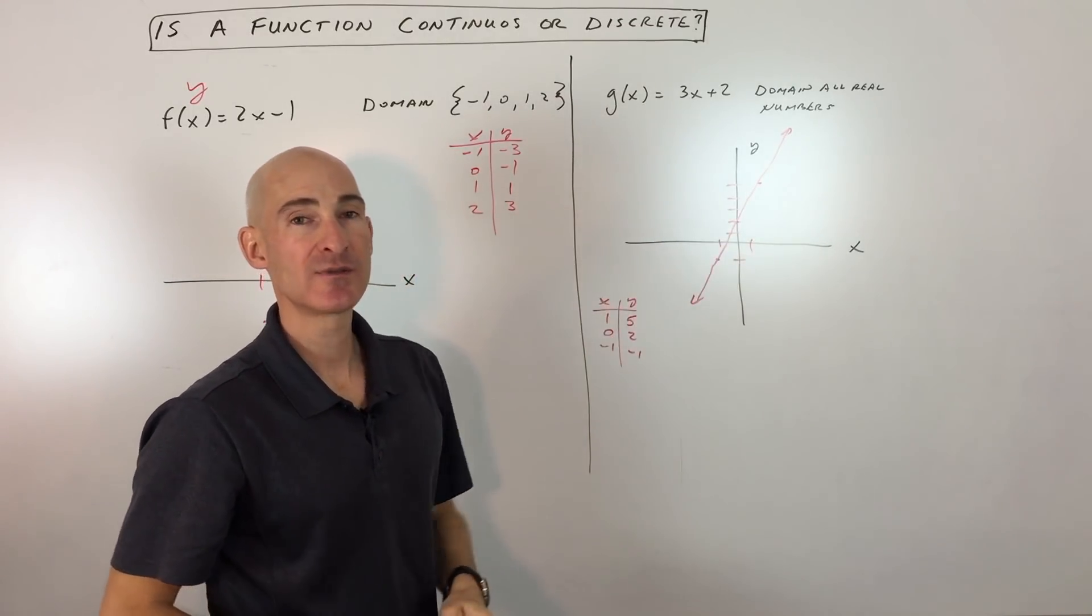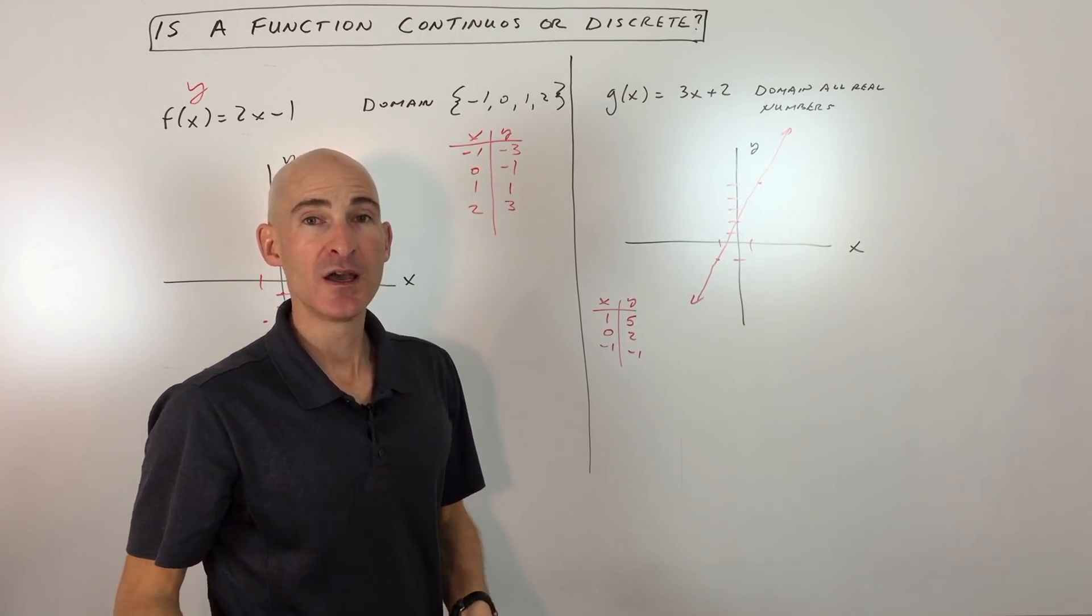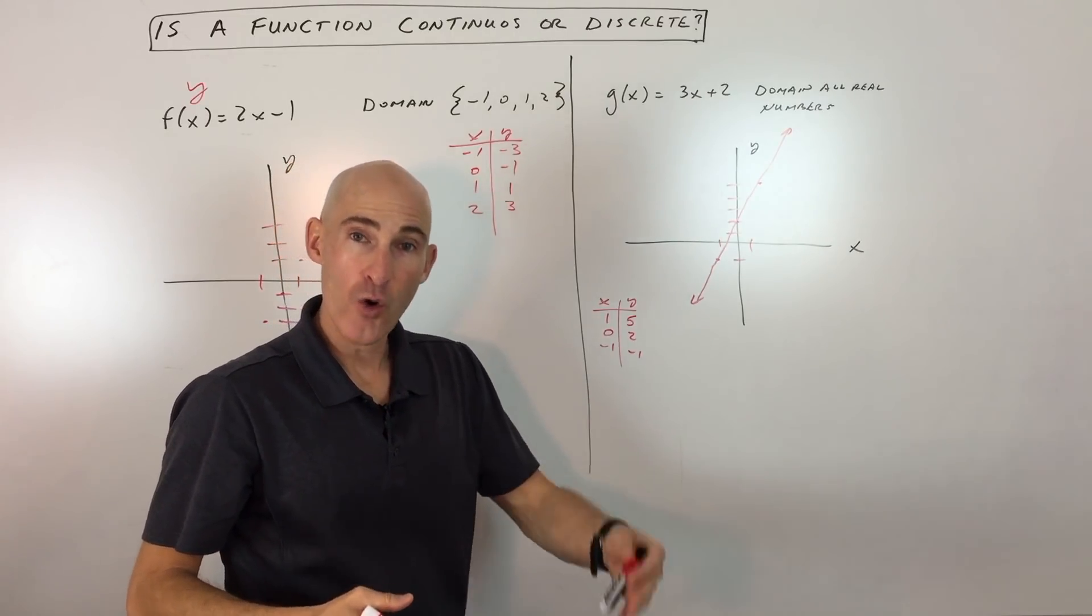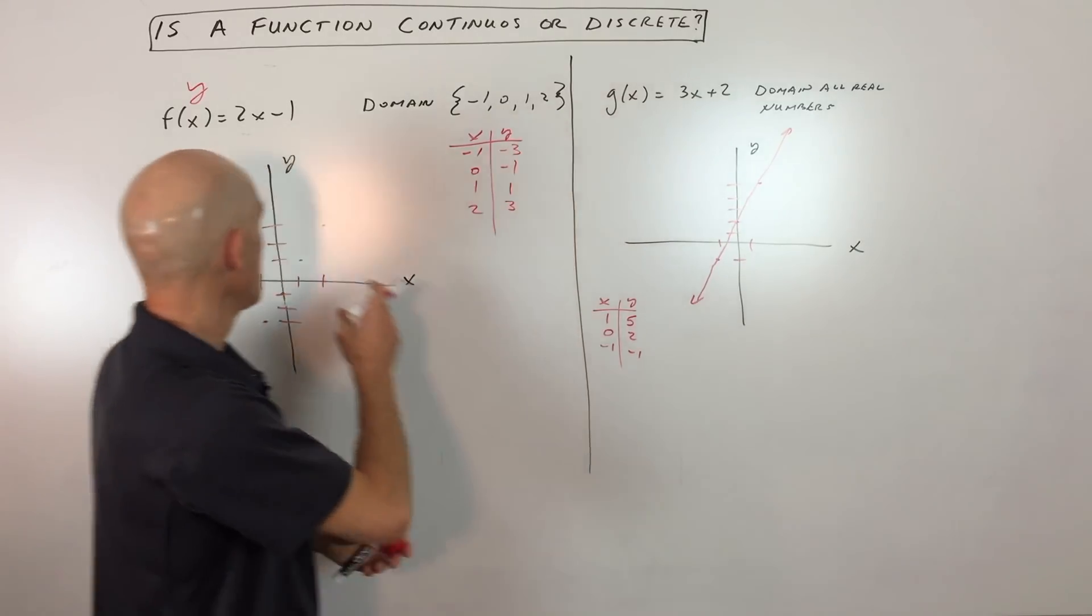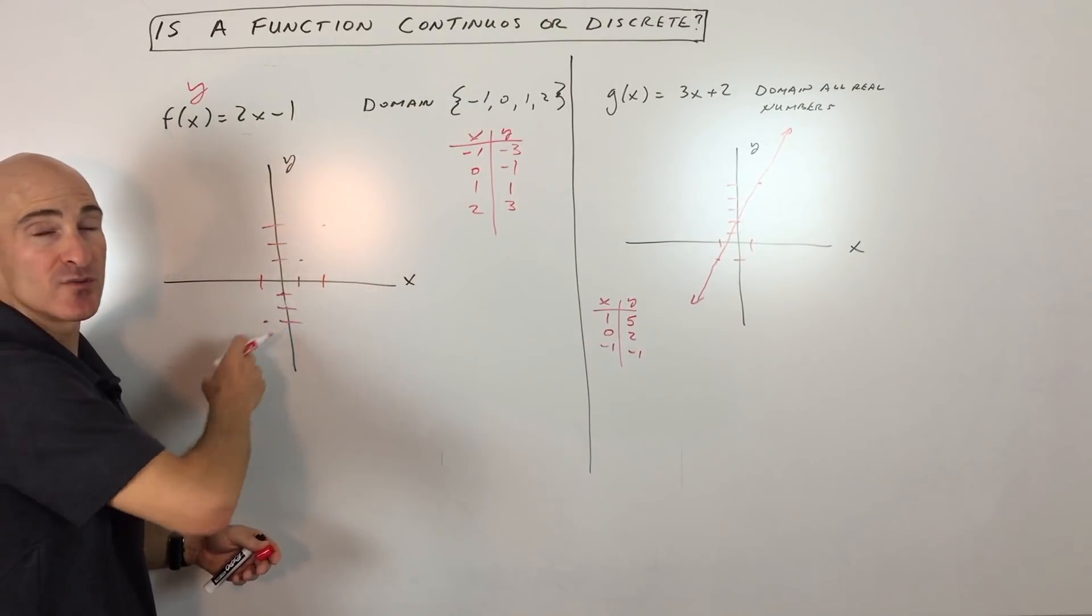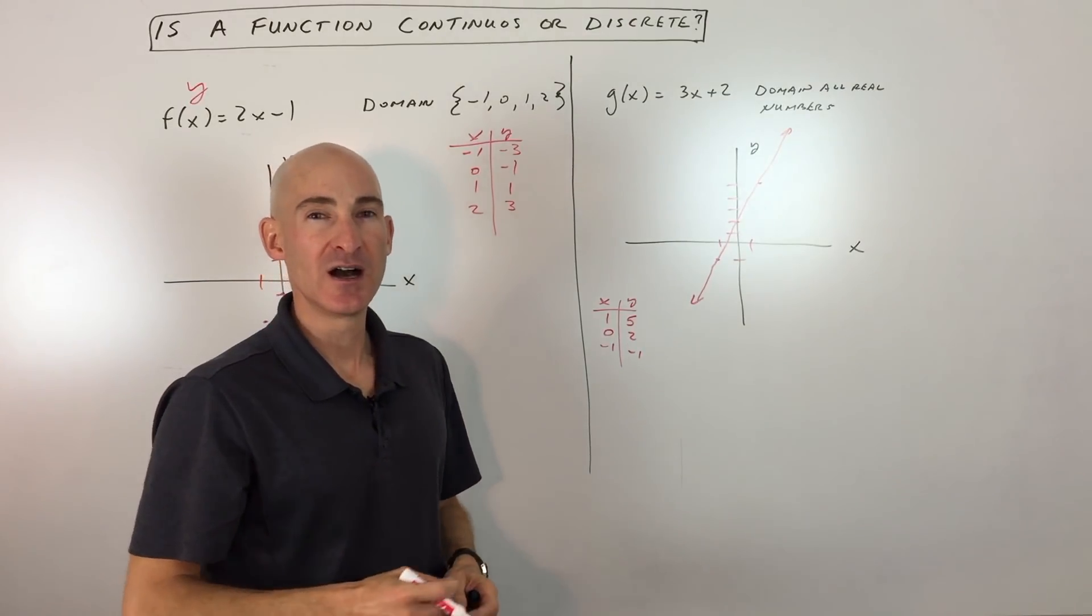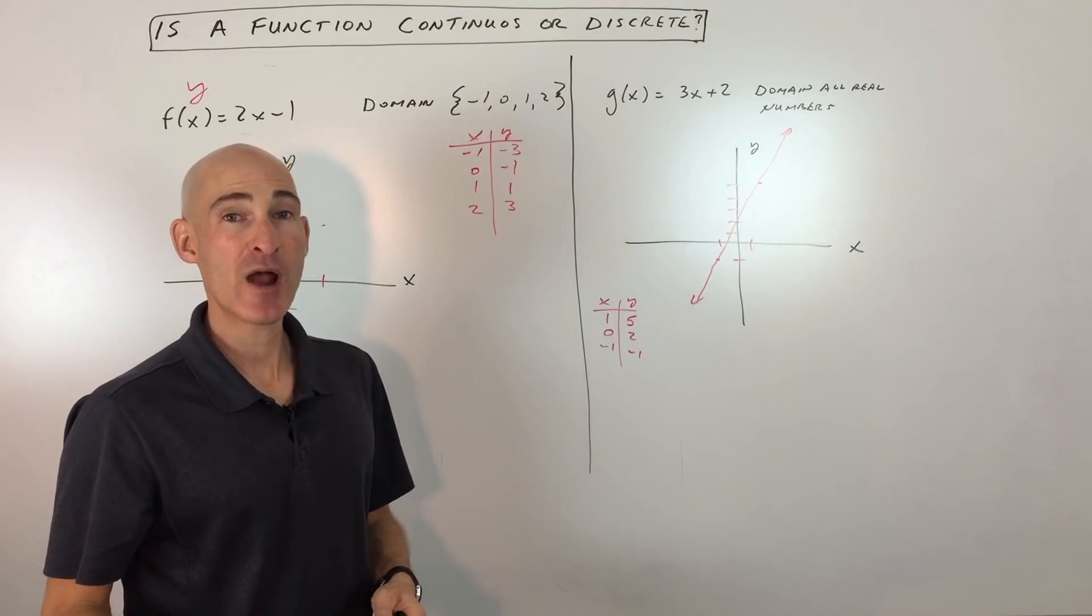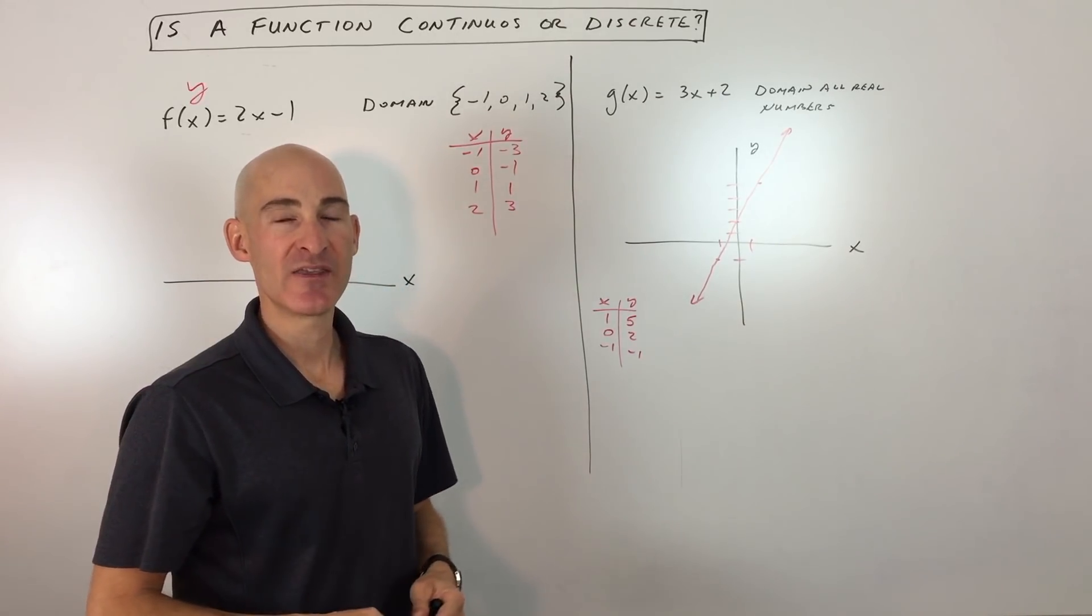So how would we know which one of these types of graphs to draw? Well, it depends on the problem. Like if you're doing a problem that's related to the number of books that you're reading, you probably would just count those in terms of whole books. So you say, okay, one book, two books, three books. So those would be individual points. You wouldn't be connecting those. You wouldn't necessarily be plotting 2.3 amounts of a book, like that. It wouldn't make so much sense in the context of that problem. Or if you're baking something, maybe so many cakes and that kind of thing.